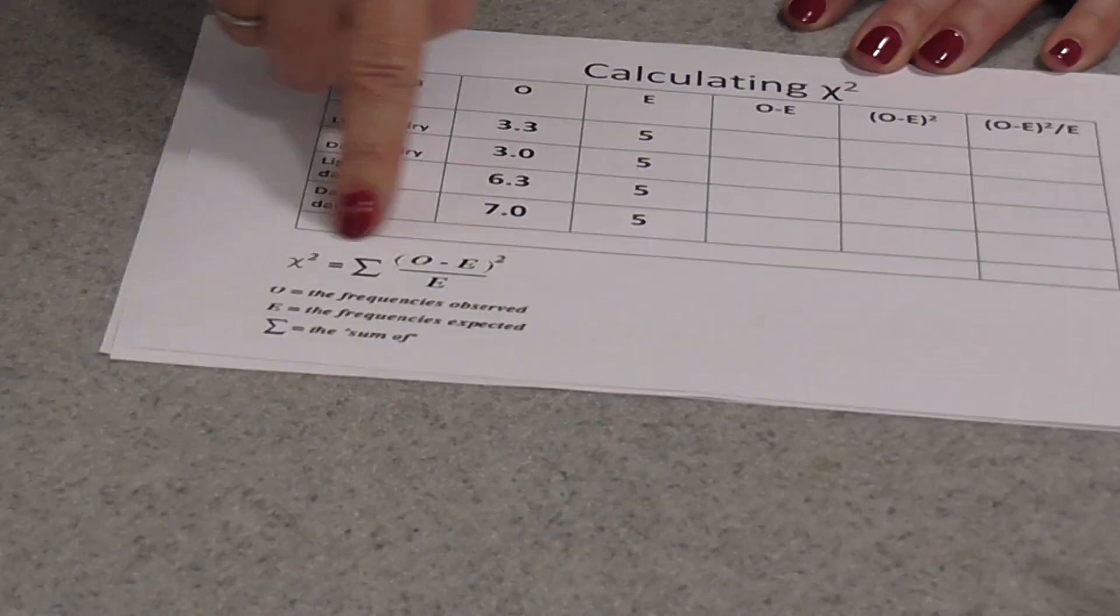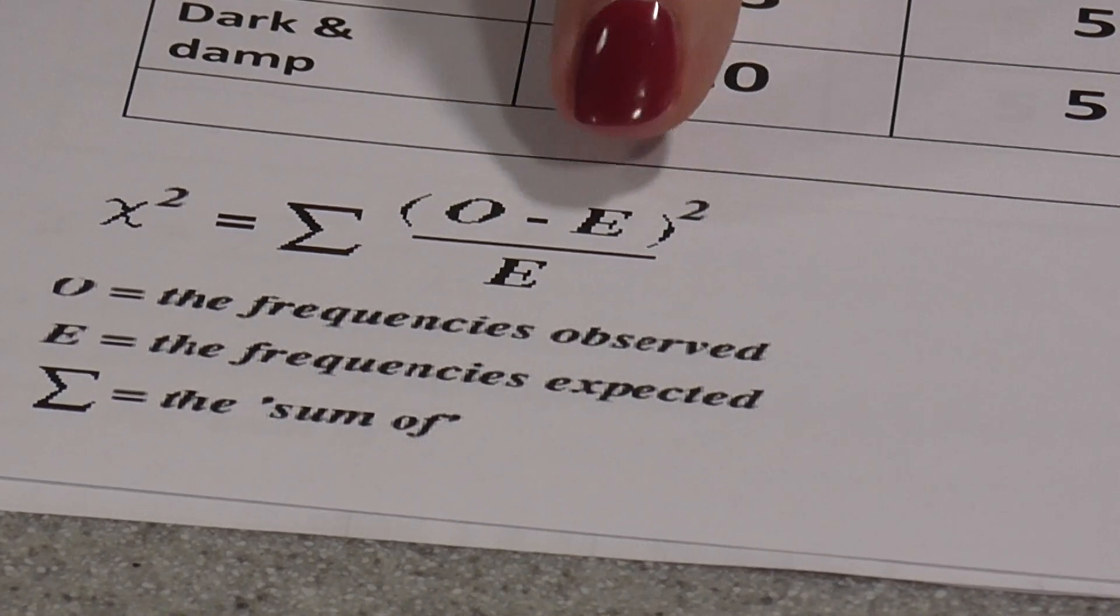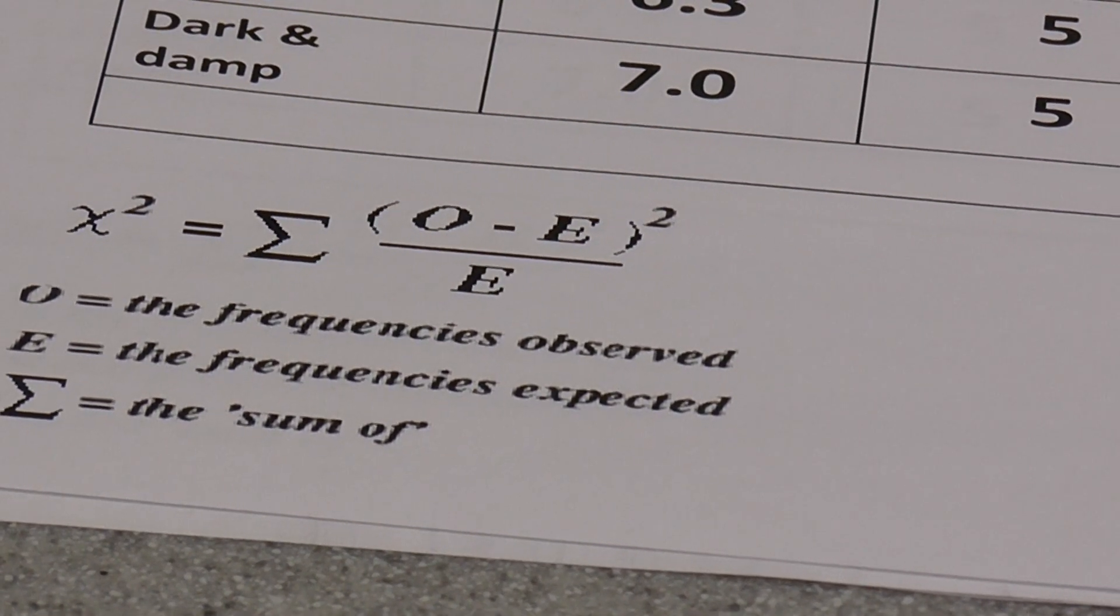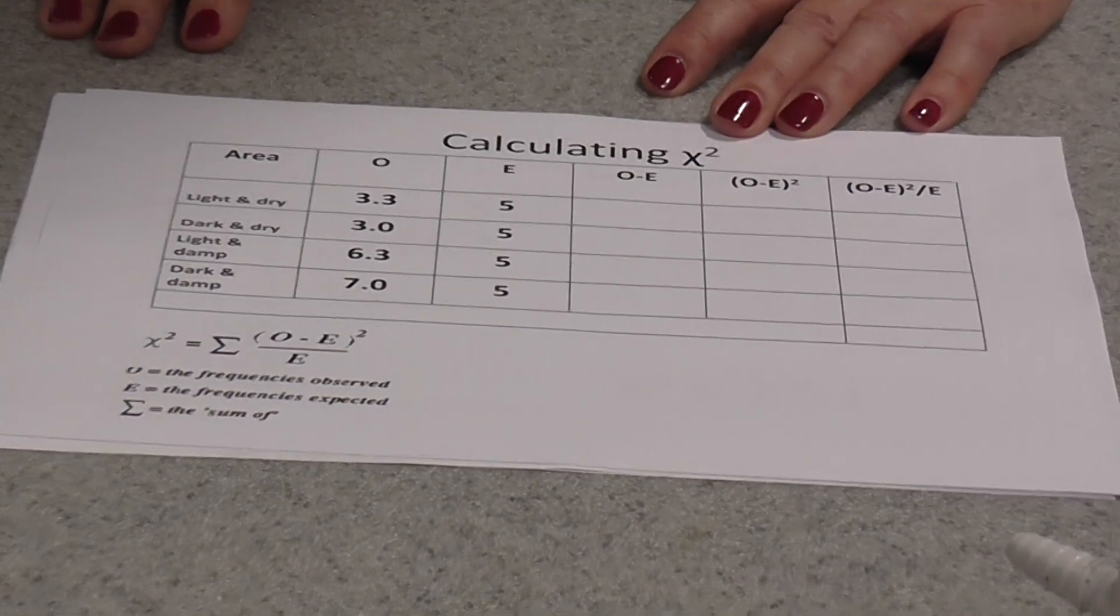This is how we calculate chi-squared. So chi-squared is the sum of the observed results minus the expected results squared divided by the expected results. And this is a nice little table you can use to actually calculate your chi-squared.